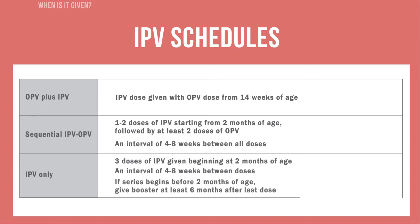If the IPV series begins before 2 months of age, a booster should be given at least 6 months after the last dose. Consult your immunization schedule to learn which of these three alternatives your immunization program has chosen.